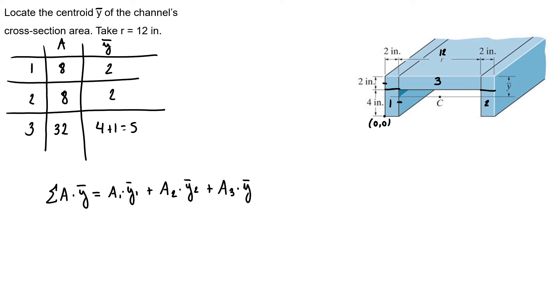So, we have our centroid is equal to 2 times 8 plus 2 times 8 plus 32 times 5 over 48.